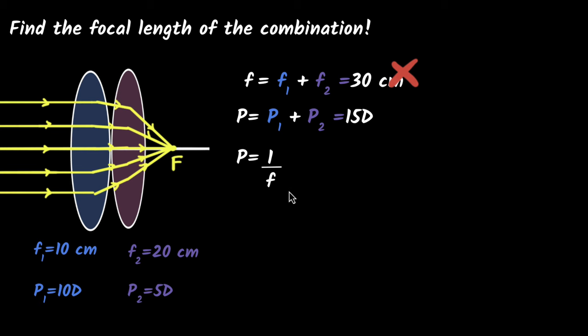So from this, I can find out what the focal length is. It's going to be one over P, which is going to be one over 15 diopters. And if I substitute, if I figure this, I divide, I'll get 0.066 meters. It's in meters because remember this is in diopters. And if I convert it into centimeters, I'll get 6.6 centimeters.